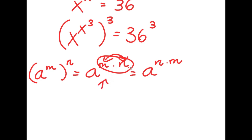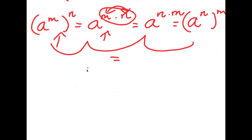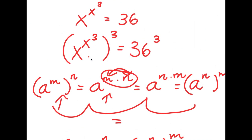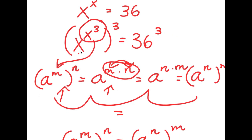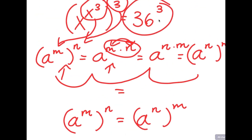Because multiplication is commutative, a^(m×n) equals a^(n×m), which means a^m^n equals a^n^m. So we can swap the exponents. Coming back to our expression, x to the power of (x³) to the power of 3, we treat x³ as m and 3 as n, and swap to get x to the power of 3, to the power of x to the power of 3, equal to 36 to the power of 3.